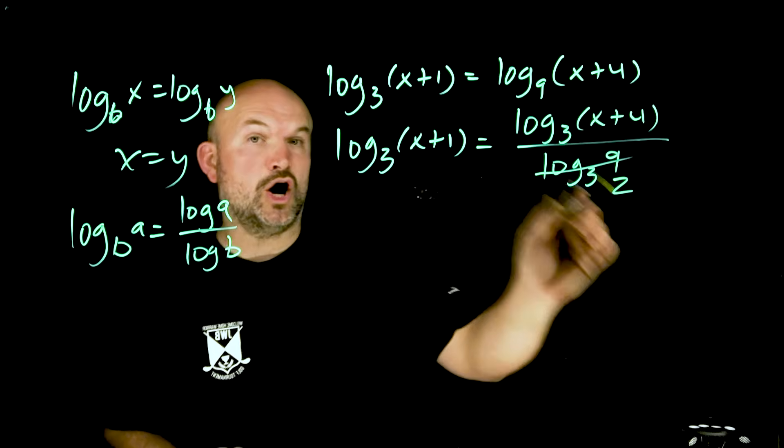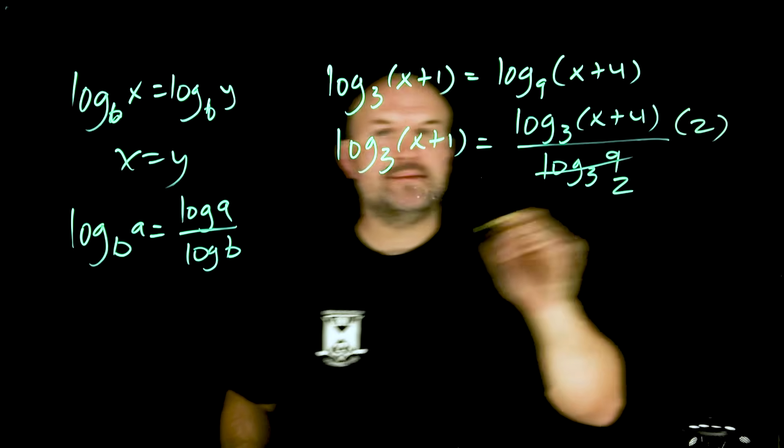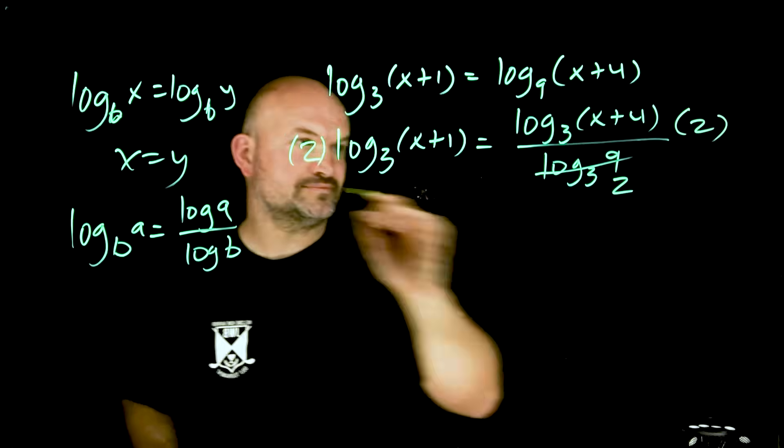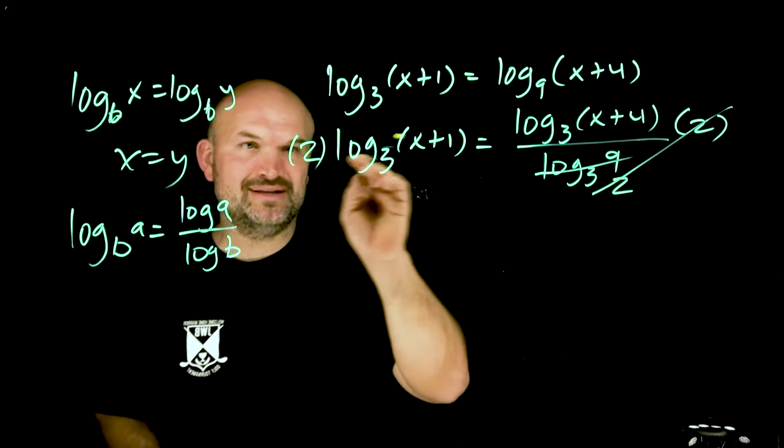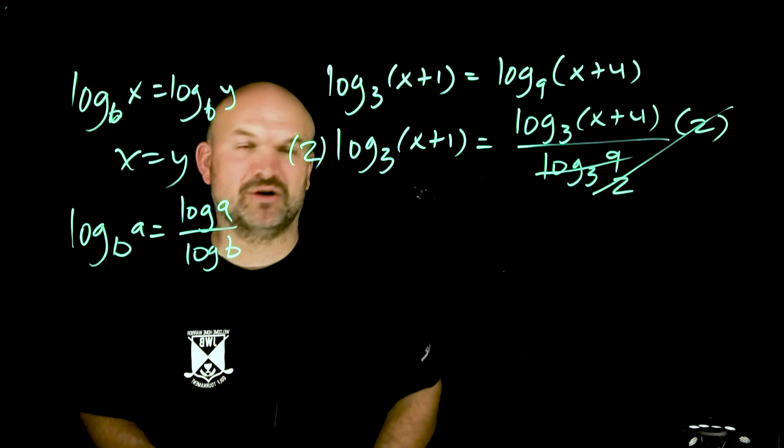So what I'm going to want to do is get the 2 off the denominator by multiplying by 2 on both sides. Now those are going to divide out, but then again I still can't use the one-to-one property because now this logarithm is being multiplied by 2.